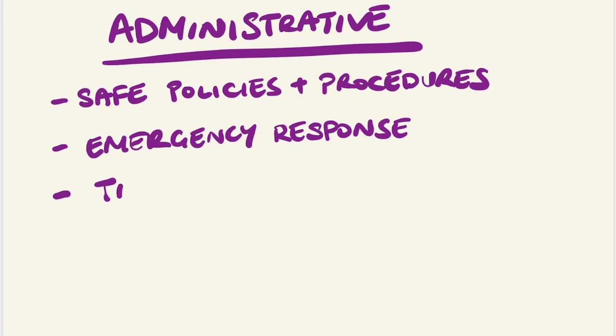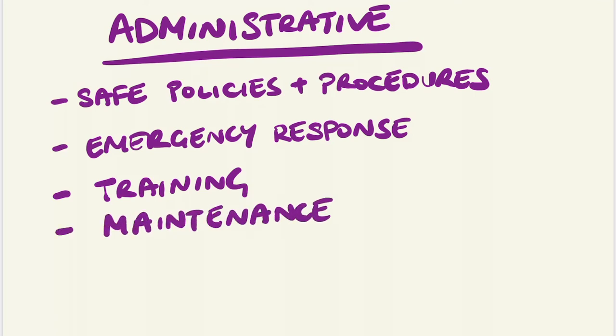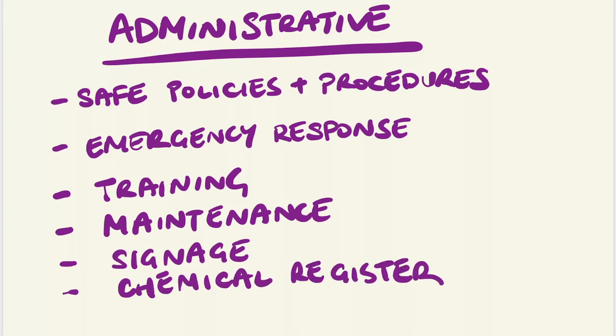The training of staff, this includes safe use, handling and storage, emergency protocols, prohibiting eating and smoking in contaminated areas and general hygiene. Regular maintenance of equipment. Adequate signage, particularly with warning signs and labelling of containers. Maintaining a register of hazardous chemicals in the workplace and regular health monitoring of workers.